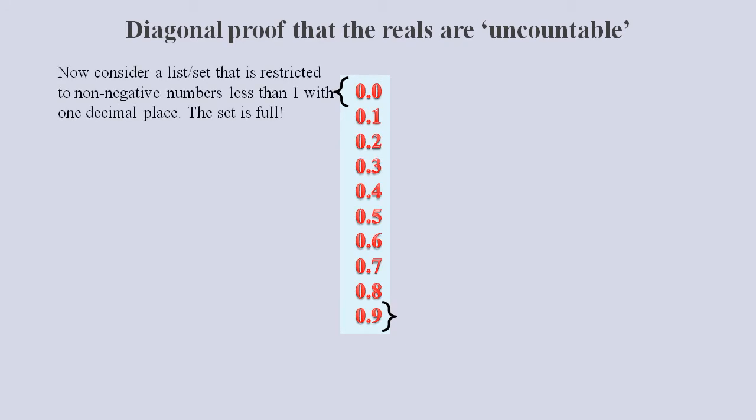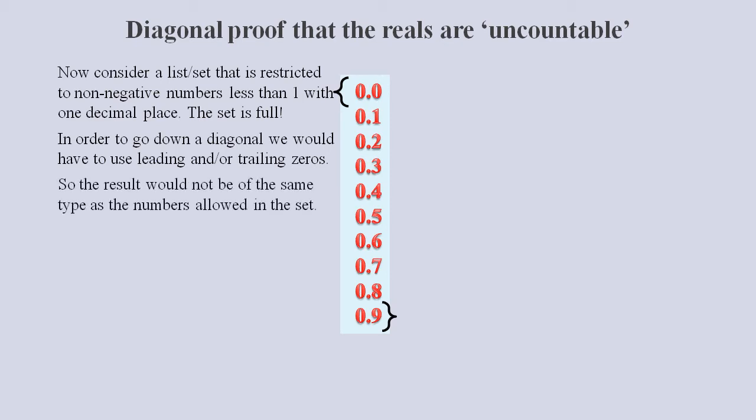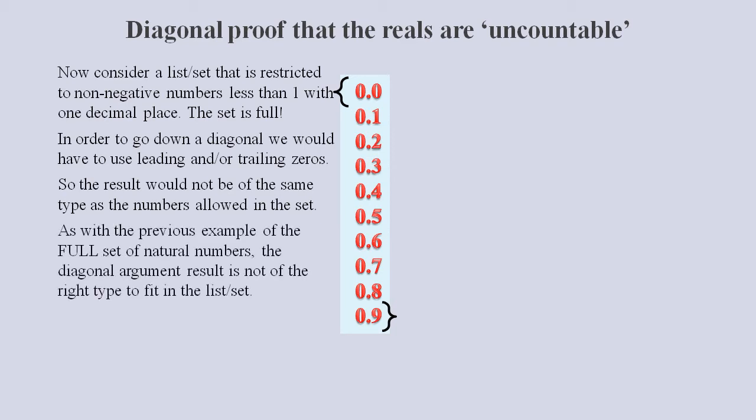Now consider a list of the numbers 0.0 to 0.9. This list is restricted to non-negative numbers less than one with one decimal place. And so for this specified type of number, 10 unique values would make it a full list. In order to go down a diagonal we would have to use leading zeros, trailing zeros or both. And the result would not be of the same type as the numbers in the list.